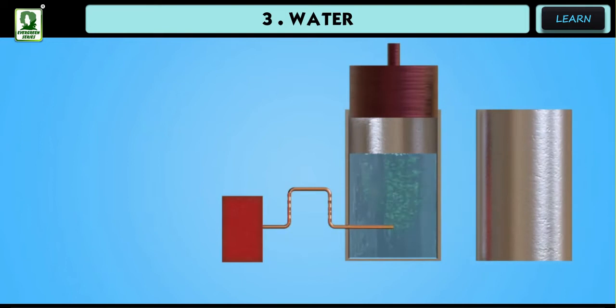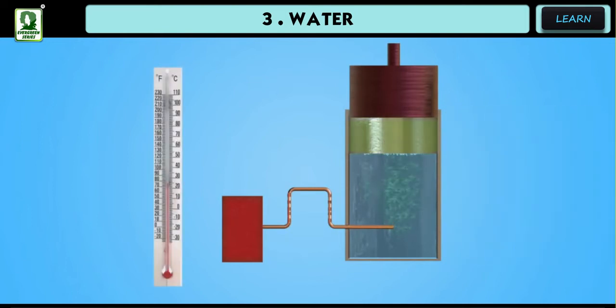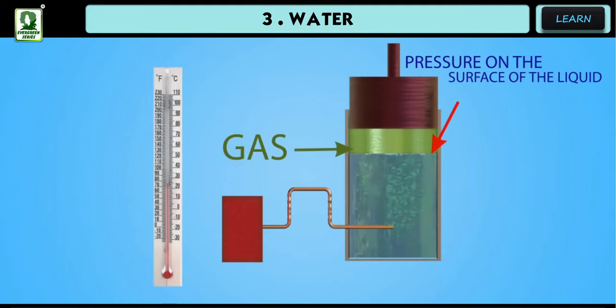It states that at any given temperature, the mass of a gas dissolved in fixed volume of a liquid is directly proportional to the pressure on the surface of the liquid.